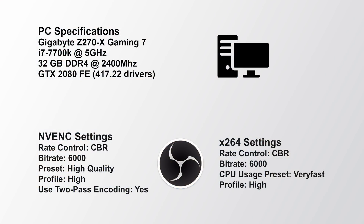Before jumping right into the results let's have a look at my streaming rig. I'm using an i7-7700K processor clocked at 5 GHz, 32 gigs of DDR4 memory clocked at 2400 MHz, the RTX 2080 Founders Edition, and all games are saved on an NVMe SSD. The two settings I'm going to be streaming at are x264 at 6000 kilobits per second at the very fast preset and high profile, as well as NVENC also at 6000 kilobits per second at the high quality preset and high profile.